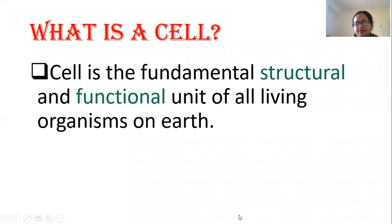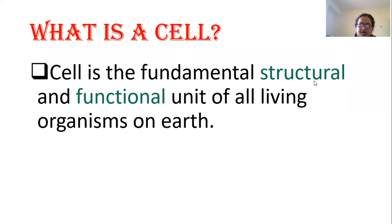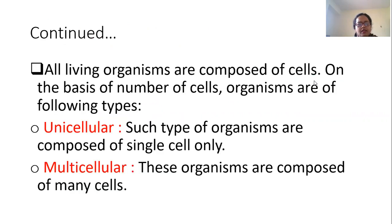First we have to understand what is a cell. Cell is the fundamental, structural and functional unit of all living organisms on Earth. All the living organisms on Earth are made up of cells — not one type of cell, there are different types of cells. Together a group of cells will form a tissue, and tissue will further form the organ. Different organ systems will combine to form the complete organism.